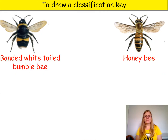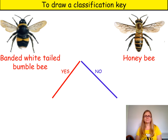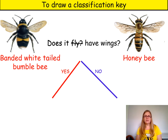Start by choosing two different animals. I've chosen a banded white-tailed bumblebee and a honeybee. Then think of a question that separates the animals with a yes or no answer. Your question must be based on an observable feature, so instead of 'does it fly?' you need to ask 'does it have wings?' However, this question doesn't separate the bees because the answer is yes for both of them.